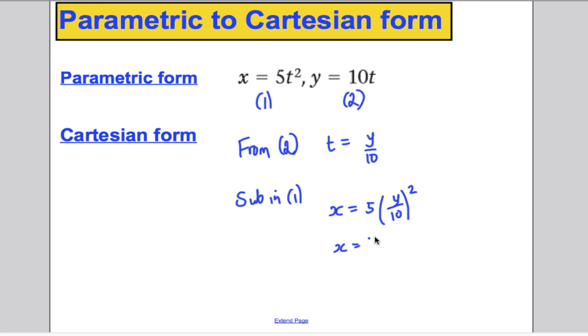So x would be equal to 5, y squared over 100. Simplifying, x would be equal to y squared over 20.